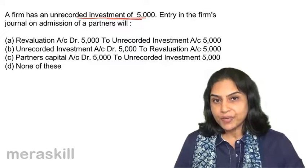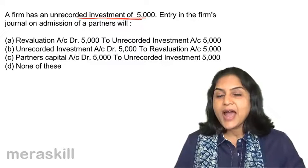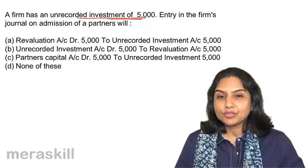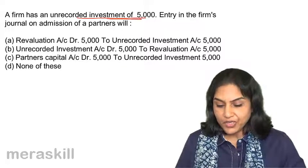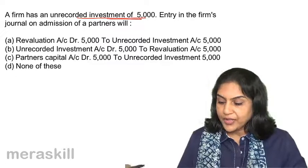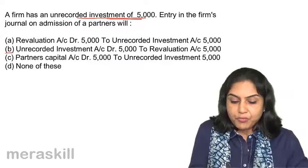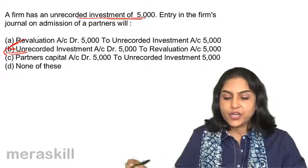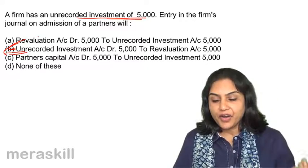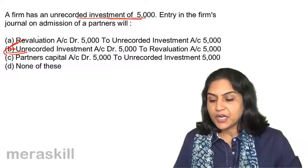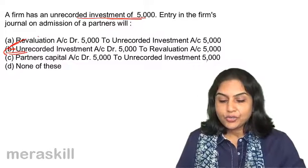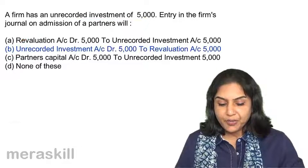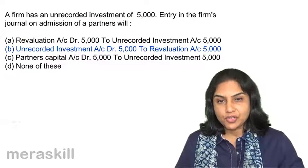If a firm has an unrecorded investment, the investment account should be debited and the credit goes to revaluation account. Therefore, option B should be the correct option: unrecorded investment account debit to revaluation account.